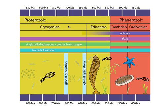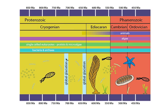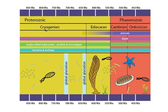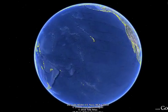The Cryogenian got its name from the two major global glacial events, often called Snowball Earth events, that occurred during this time period here and here, where much of the globe is thought to have been covered in ice. Cryo means ice. The Ediacaran gets its name from the Ediacaran fossils themselves, which were first found in a place in Australia called the Ediacaran Hills.